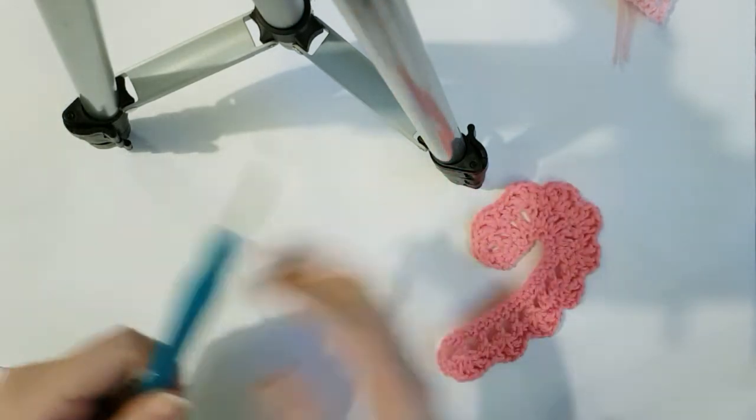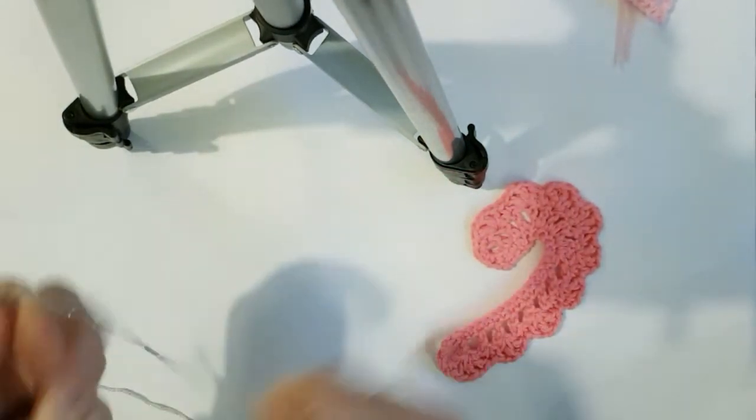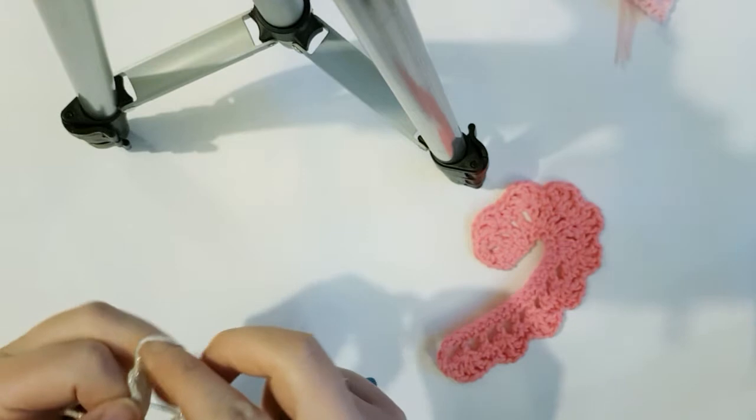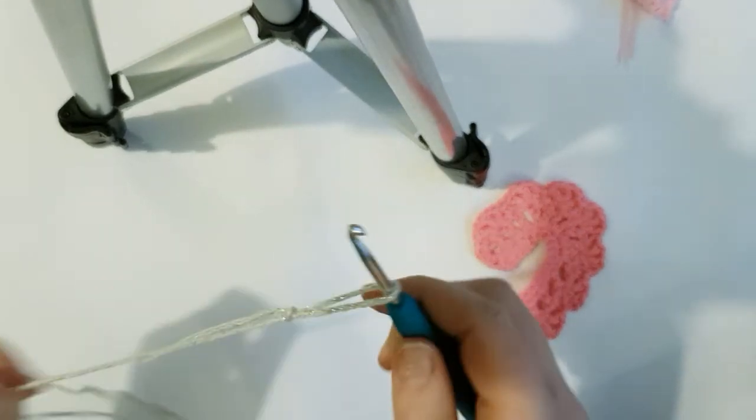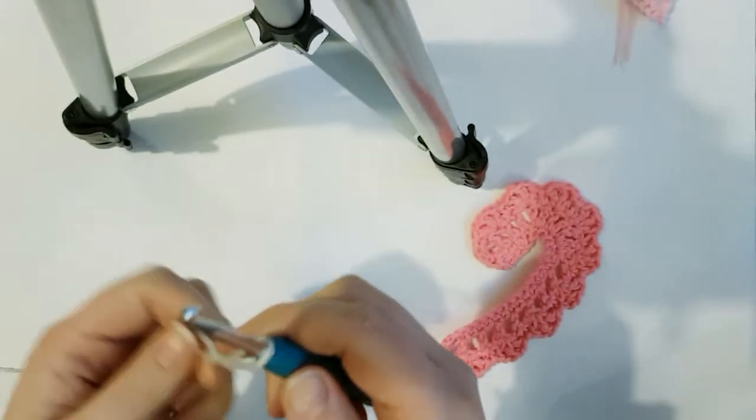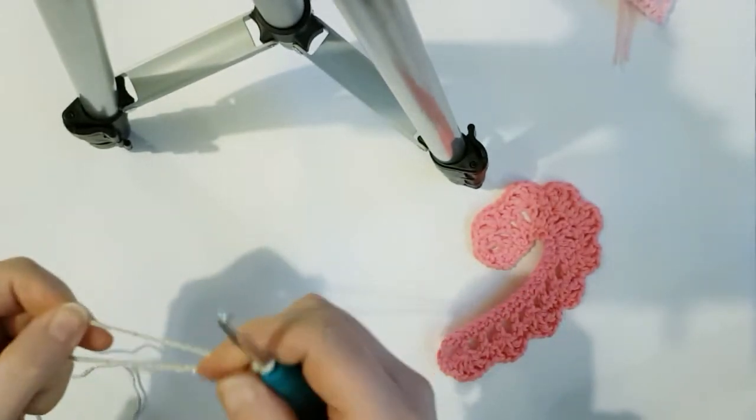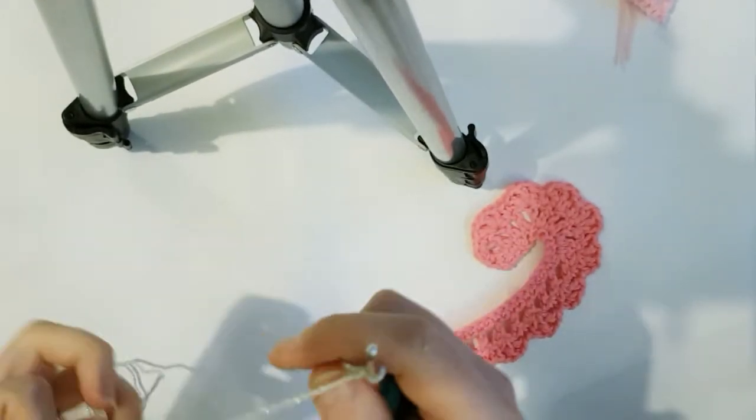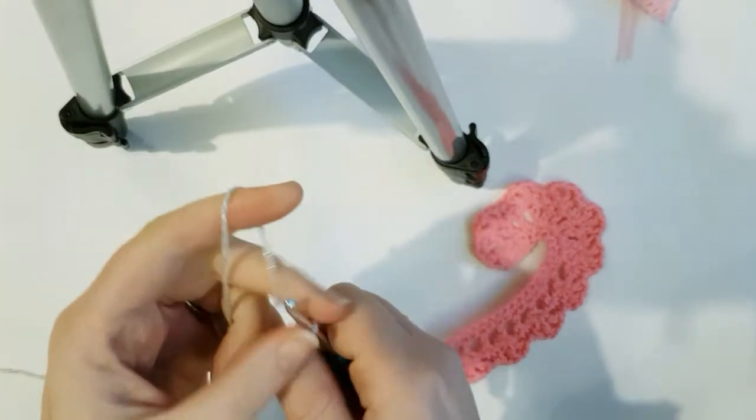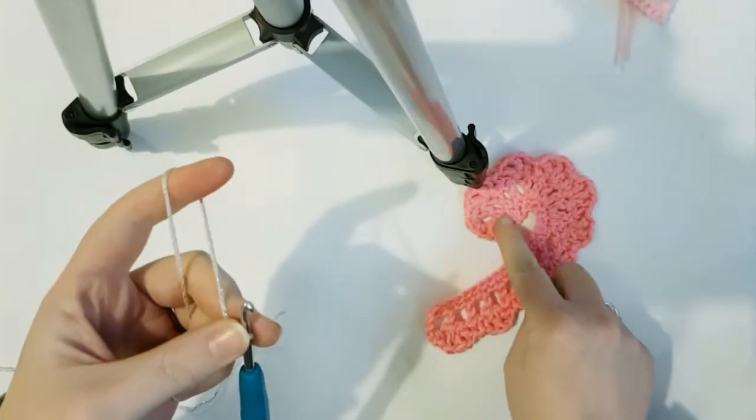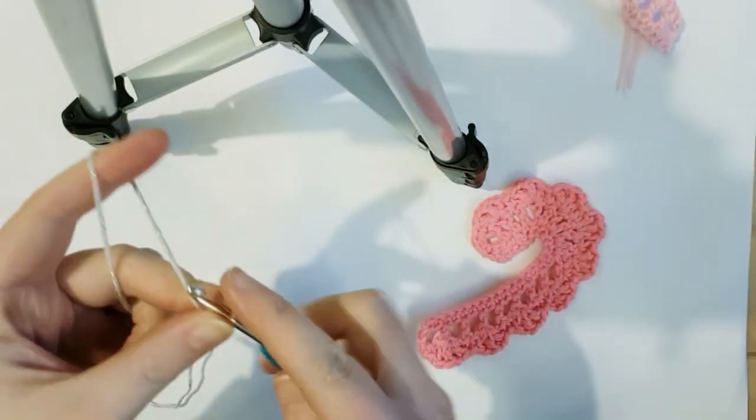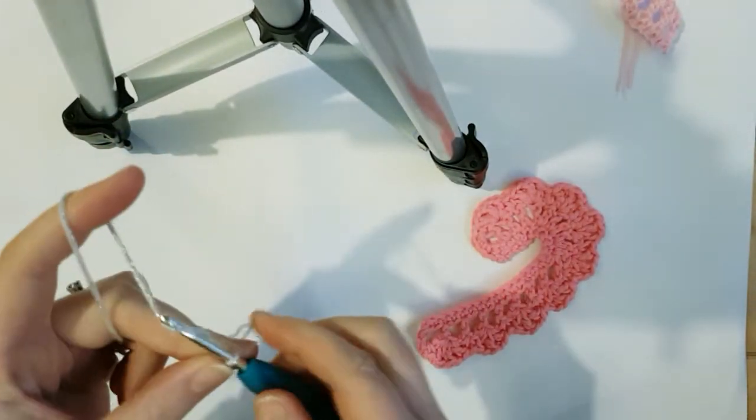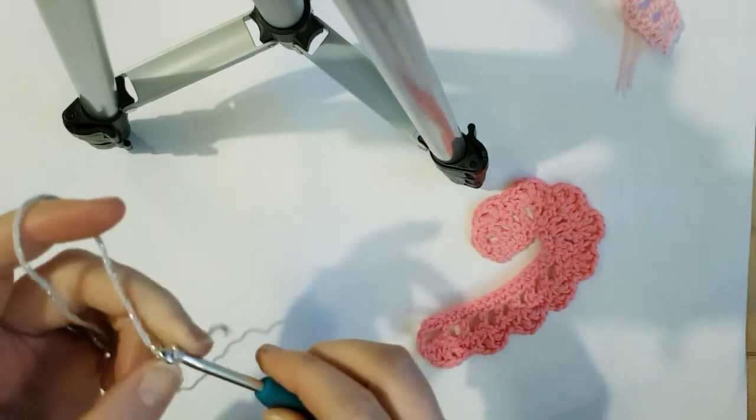So what you want to do first of all is start off by doing a slip knot, whichever way you prefer, and pull it tight onto your hook. And then we are going to chain 25, which is basically the measurement of the inside edge of your candy cane. So if you've got a bigger candy cane then you can make this starting chain longer.